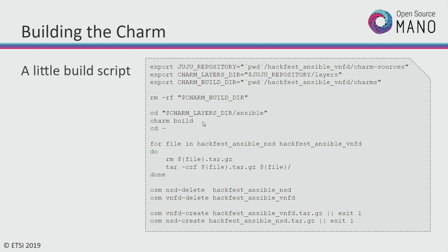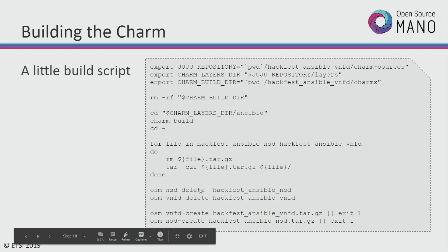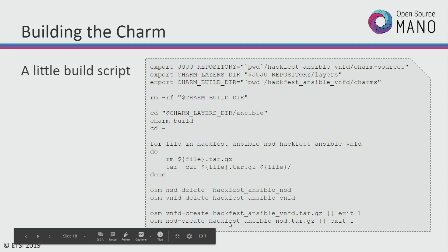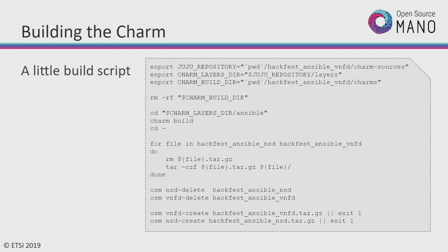So I just go into that charm layer, build it, and create the tar files for it. Because I tend to do iterative development, I will typically have the previous version already present in my OSM. So I execute the deletes of them and then create them. That way anytime I make a change to a charm source, I just go ahead and rerun this, and it rebuilds all the charm packages for me, rebuilds the VNFD targz and the NSD targz, deletes the old versions, uploads the new versions, and off we go.